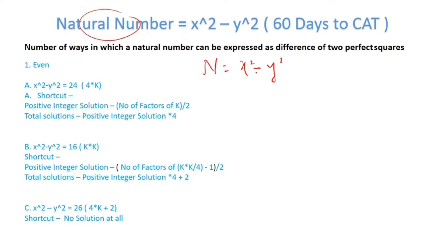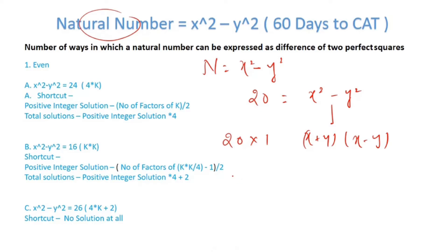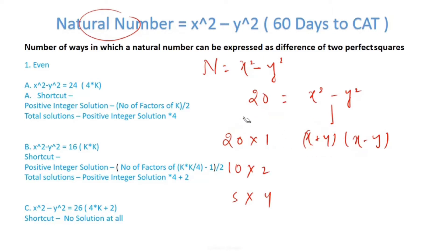A number expressed as x² minus y² — let's say the number is 20, just for an example. This can be written as (x+y)(x-y). Now, how can I write 20? I can write it as 20×1, I can also write it as 10×2, and I can also write it as 5×4. If 20×1, then x+y = 20 and x-y = 1.